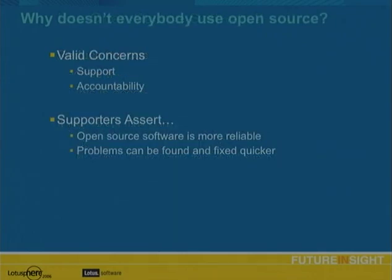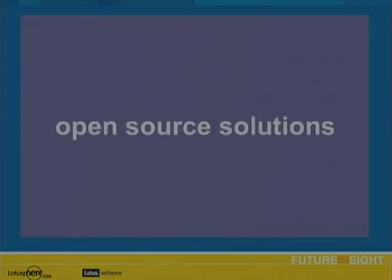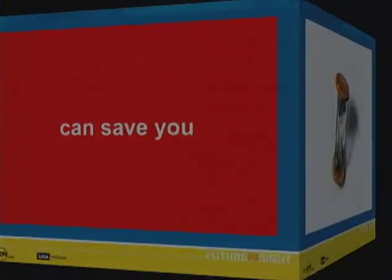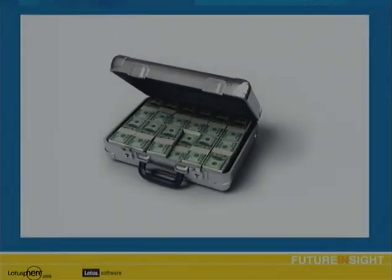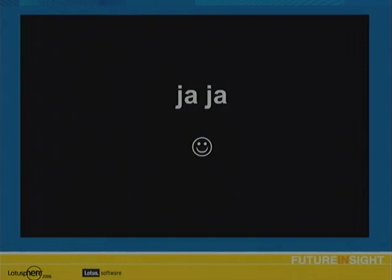What are some valid concerns about why people won't use open source software? Support and accountability — when something goes wrong, who takes the hit? But supporters assert that open source software is more reliable and problems can be found and fixed quicker. So let's see how OpenNTF open source solutions can save you time, money, and your hair.